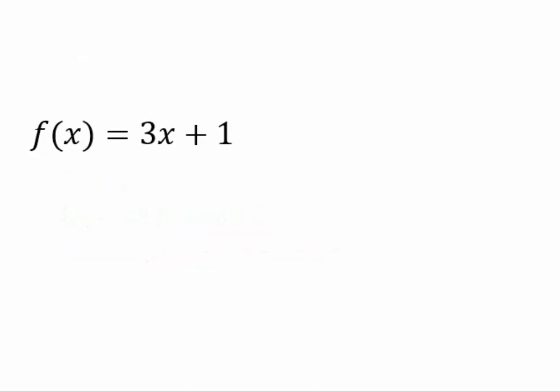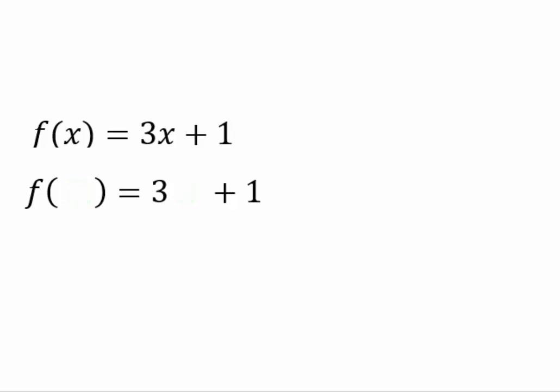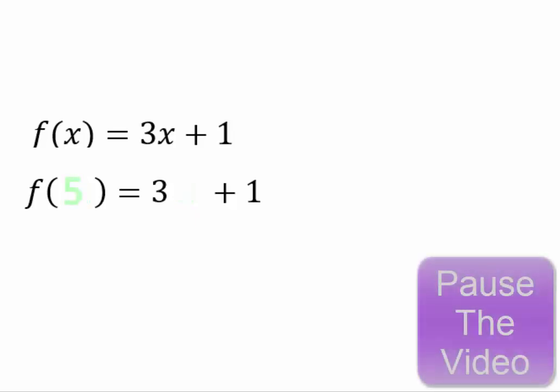Let's work with the function f of x equals 3x plus 1 and evaluate functions using this notation. You can think of it as f of blank equals 3 times blank plus 1, and replace the blank with an input. So if you put in a for x, you'll have 3a plus 1 as the output, so f of a equals 3a plus 1. What if you change the a to 5? Pause the video and see if you can figure out what f of 5 would be.